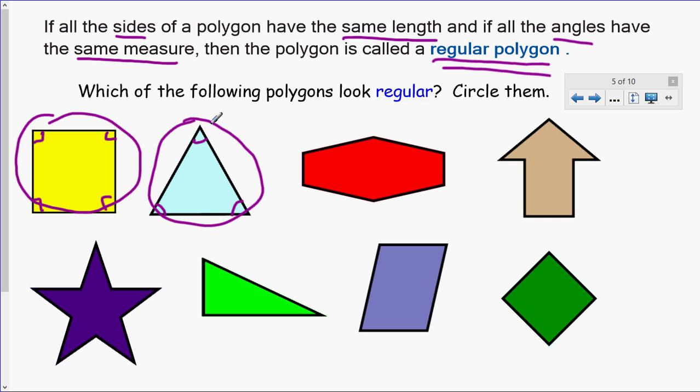Now this third one here, 1, 2, 3, 4, 5, 6. This is a hexagon, but it does not look regular to me because these sides look much shorter than these sides. So I'm not circling that one. The arrow also does not look to be regular because look, this is a very short side, there's a longer one. The angles, these are 90 degrees, these are very acute. So no, that's definitely not.